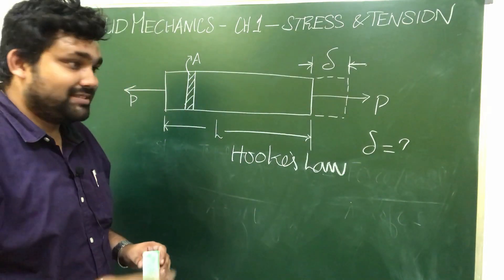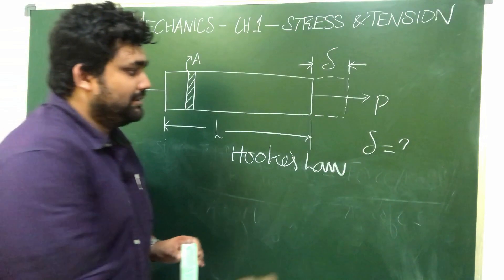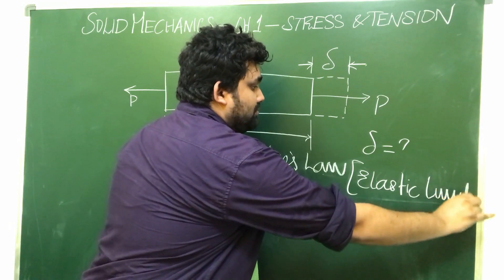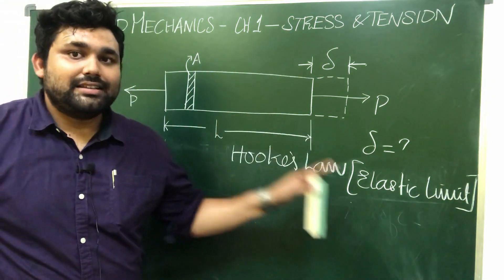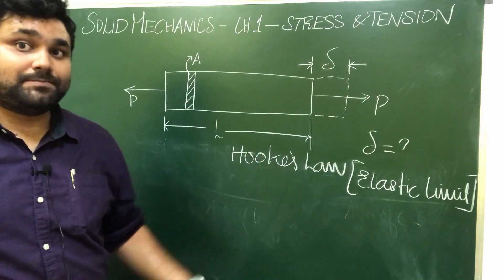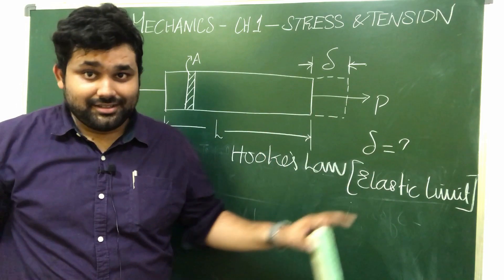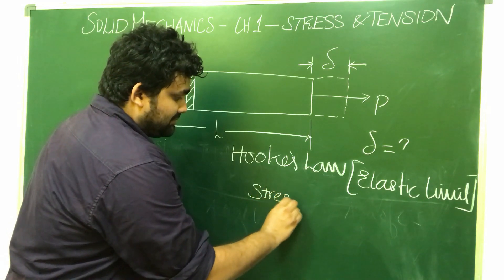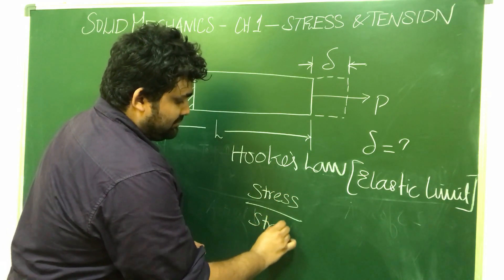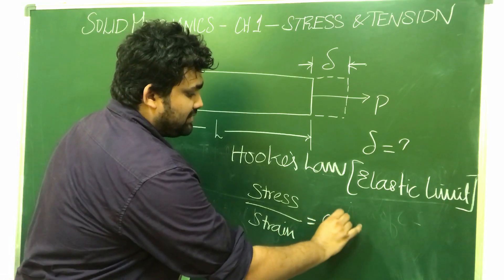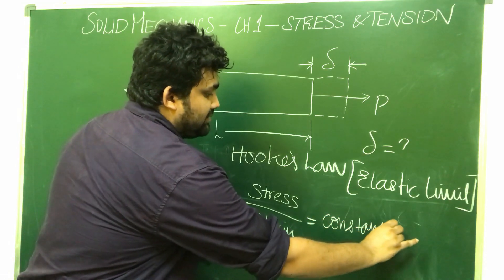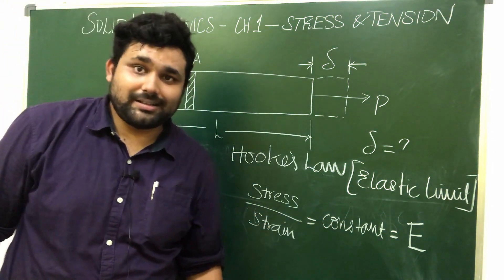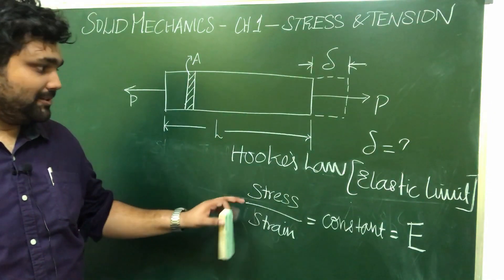Now, Hooke's Law. Hooke's Law is only applicable within the elastic limit. If the material is within the elastic limit and you apply force on the material, then the ratio of stress to strain is always a constant. Once the material has reached its plastic limit, Hooke's Law no longer applies. This is the important condition — elastic limit.